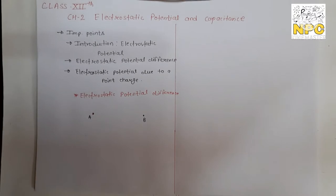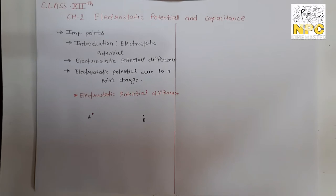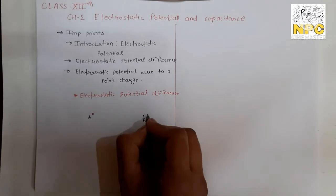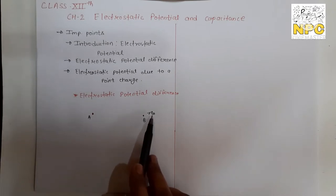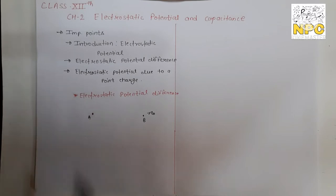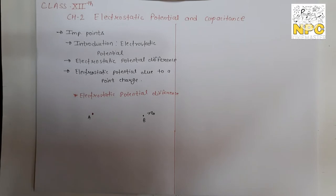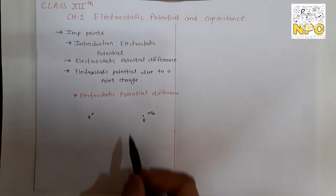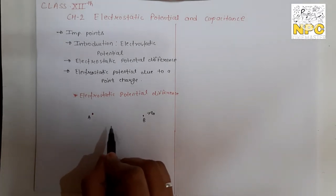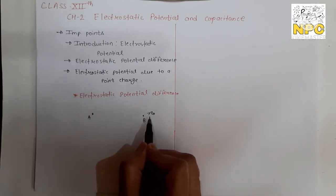We take two points, Point A and Point B. We use a positive unit test charge. We bring this positive test charge from point B to point A — that work done defines the electrostatic potential difference between the two points.